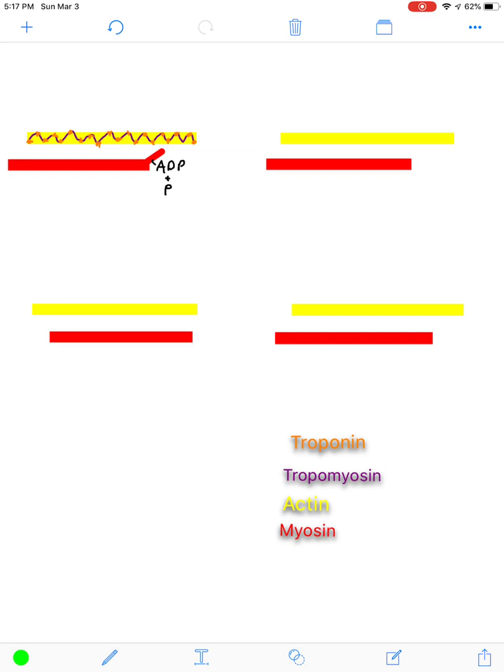Now for actin and myosin, actin is the thin filament that gets moved, and myosin is going to be the thick filament, and myosin is that motor protein. So myosin is the protein that is actually moving, and it's moving actin during contraction.